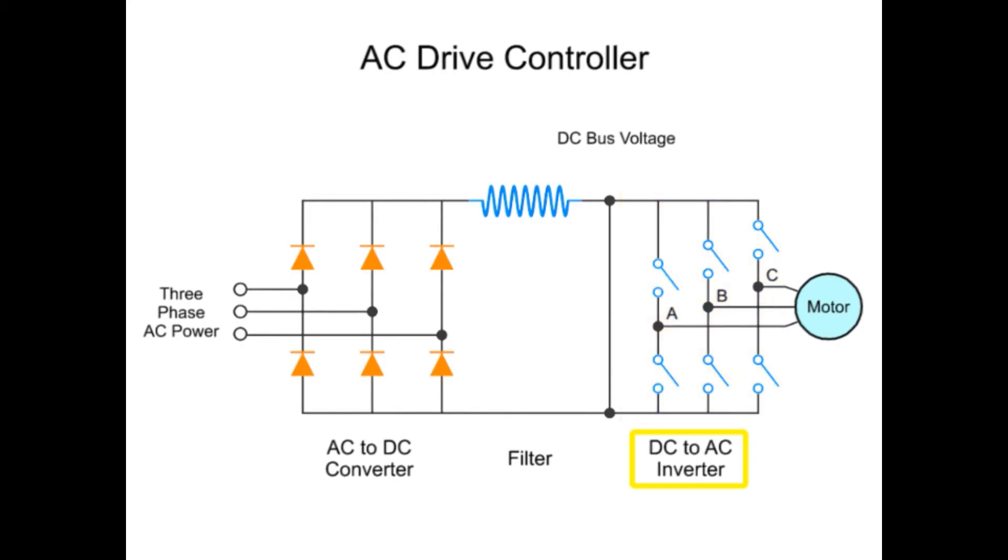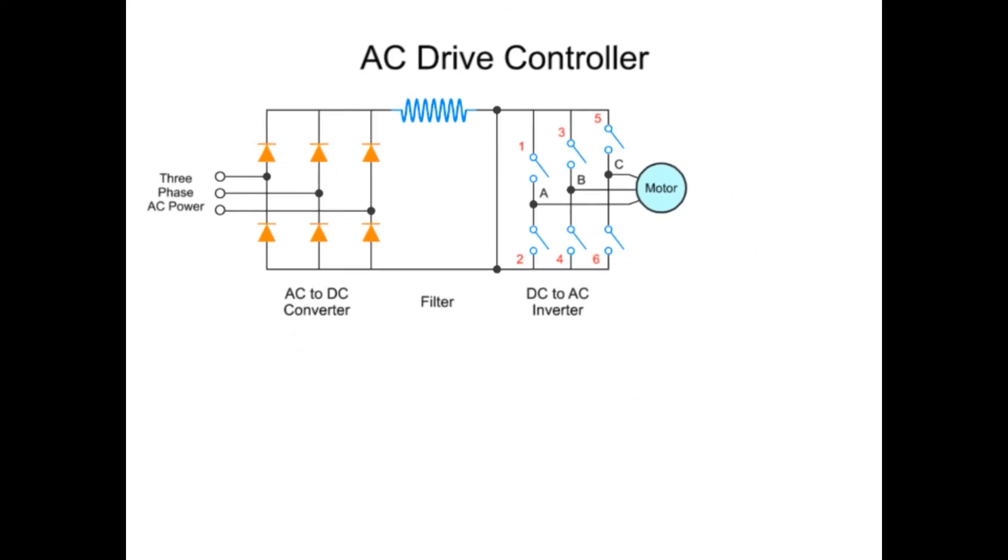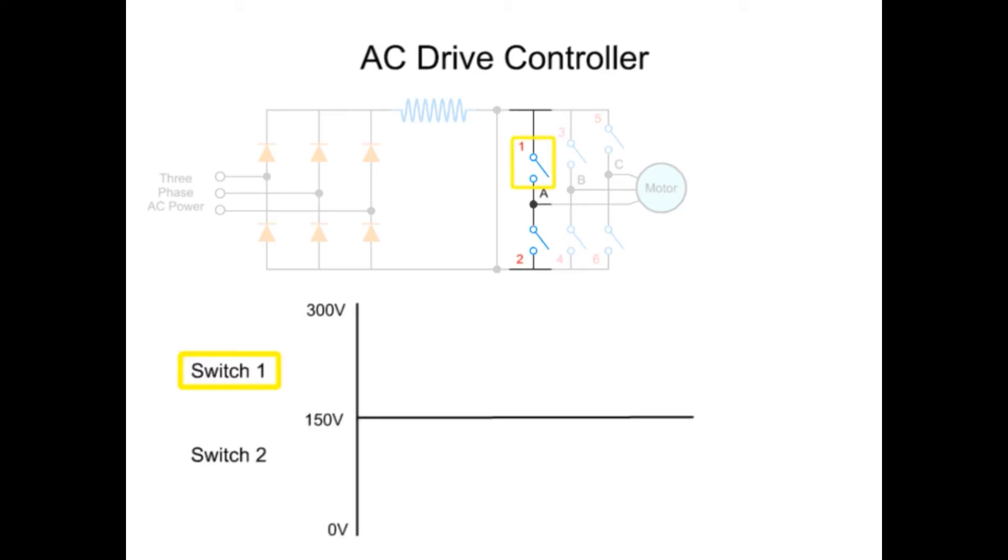In a typical three-phase frequency inverter, there are six switches with a pair of switches for each phase. In each pair of switches, one switch generates the up component of the sine wave and the other generates the down component.